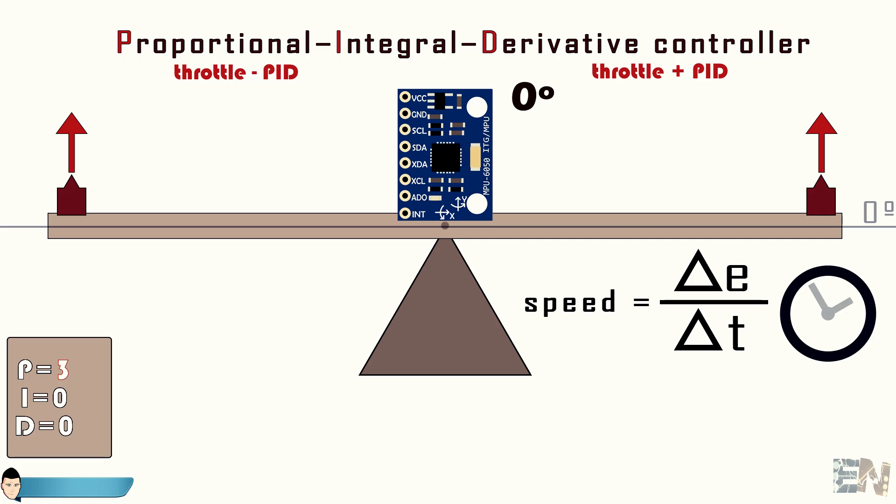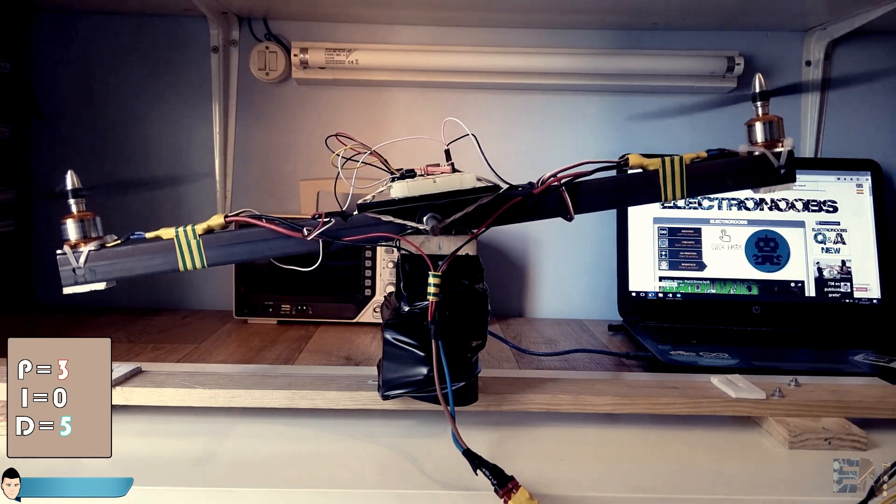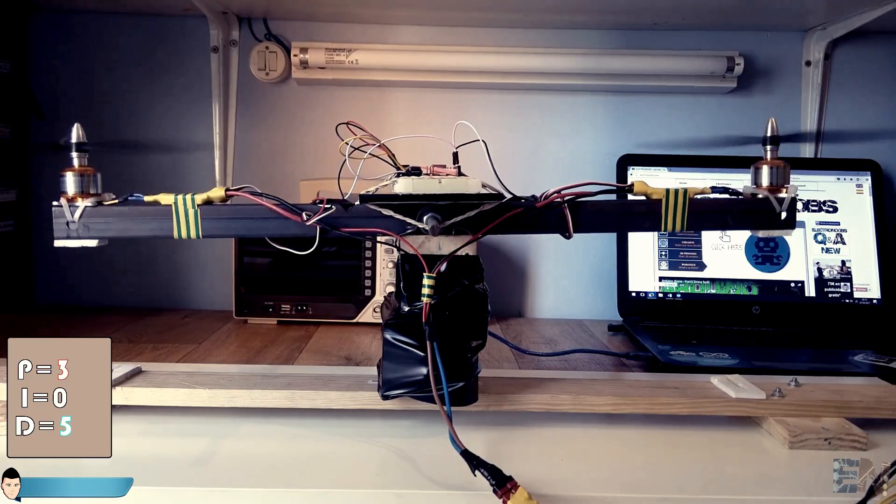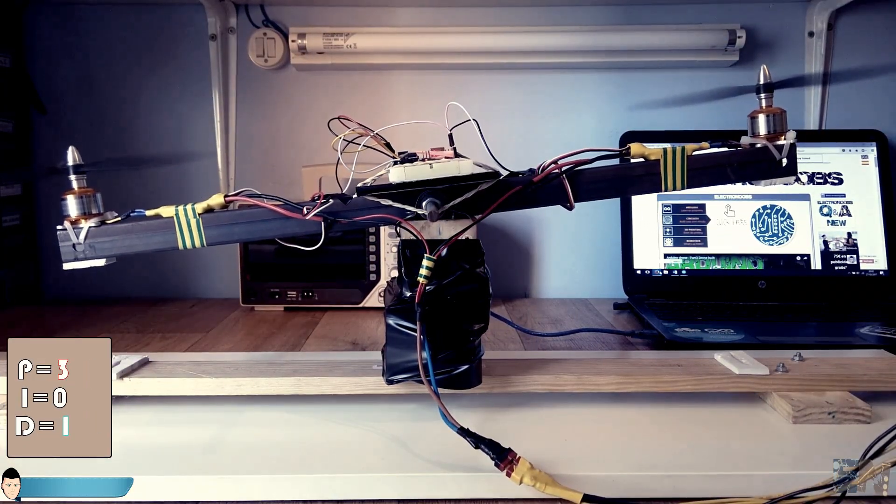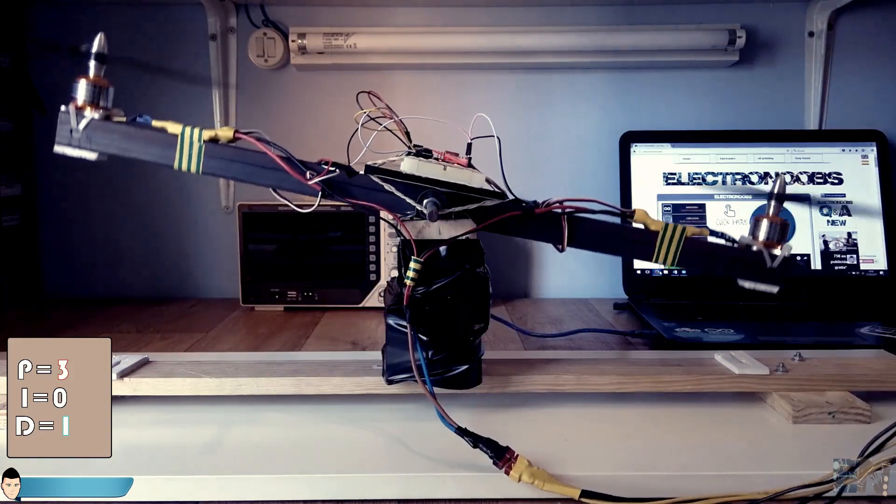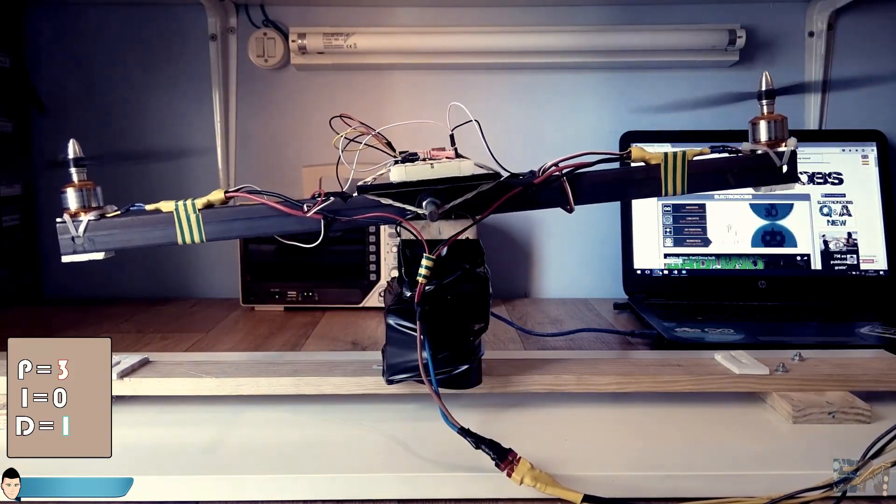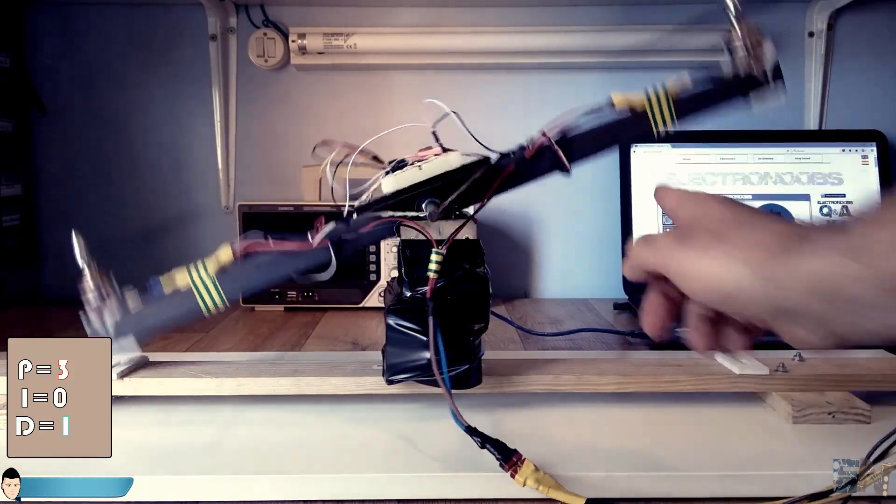Now we have to multiply this speed by the derivative constant which in this case won't be zero anymore. I set the derivative constant too high and the system gets crazy. Set it too low and it won't affect.